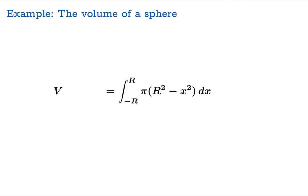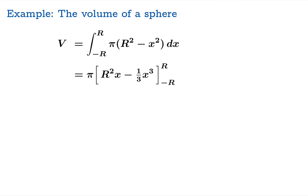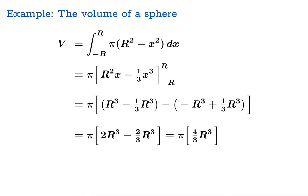That's just a polynomial. Big R is a constant. Find the antiderivative, plug in the endpoints, crank it out and simplify, and there's your formula for the volume of a sphere.